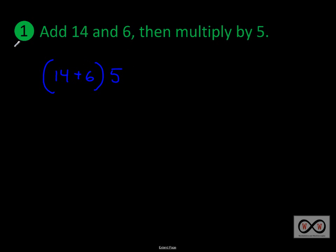You'll notice in some expressions that there really is no operation symbol between a digit and the parentheses — it's implied that you multiply. When there's no operation symbol given, it is implied that you multiply. If you were to evaluate this and set it equal to something, it would become an equation, but we're not going to solve for that. So the expression is 5(14 + 6).